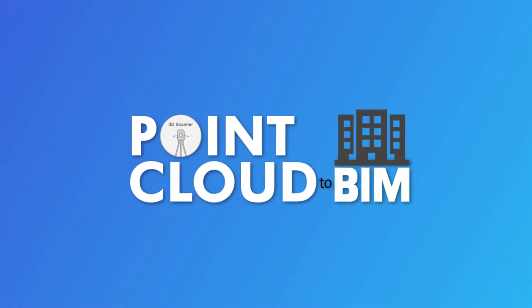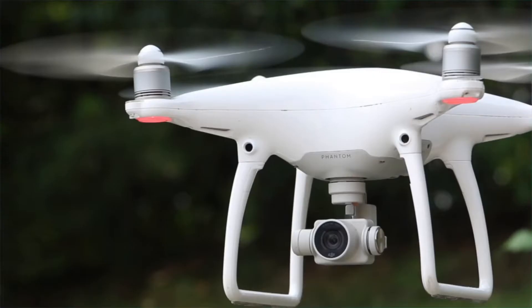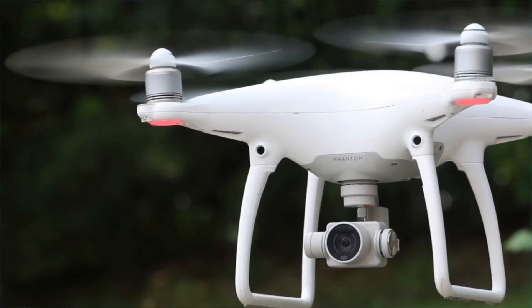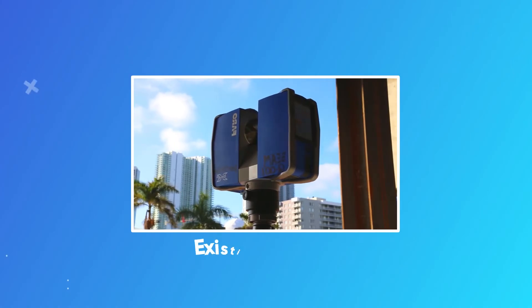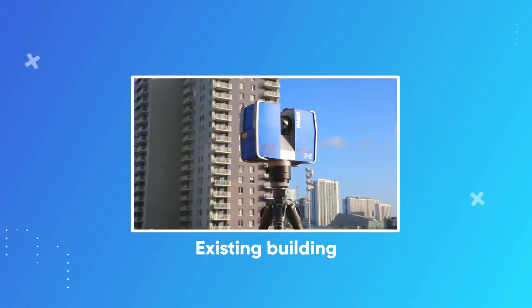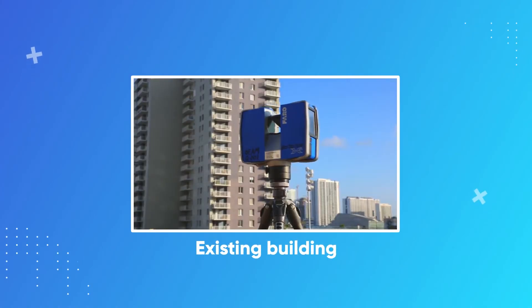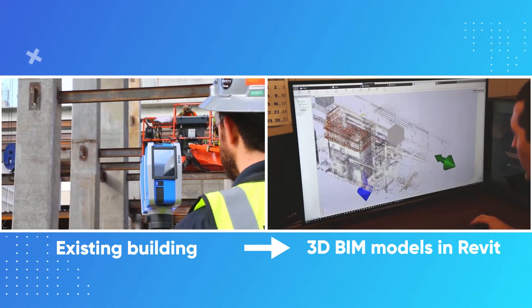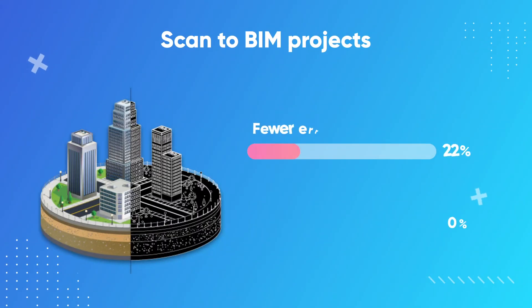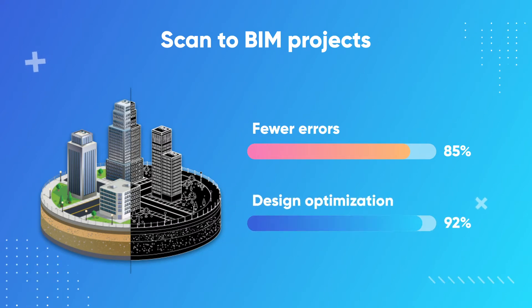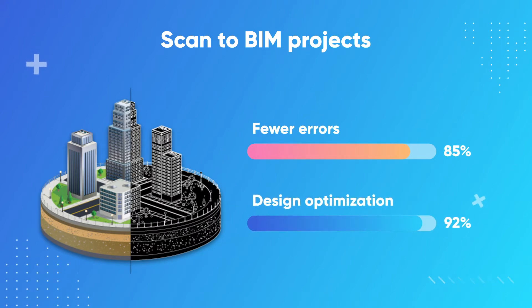PointCloud to BIM technology uses drones and high-end laser scanners to capture millions of data points of existing buildings to create 3D BIM models in Revit. Scan-to-BIM projects have shown 85% fewer errors and 92% design optimization.